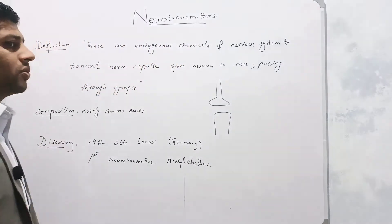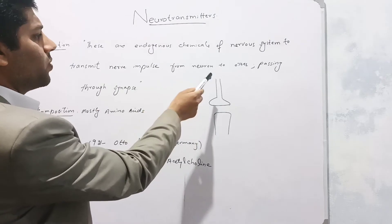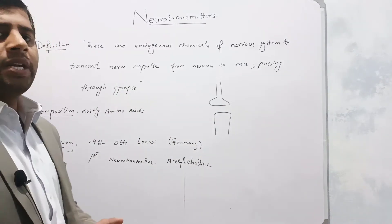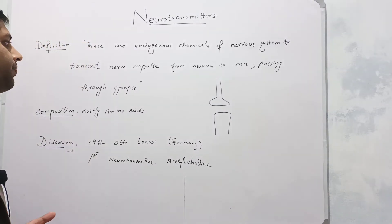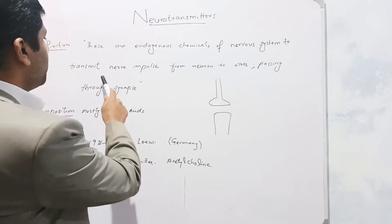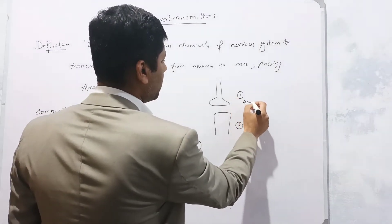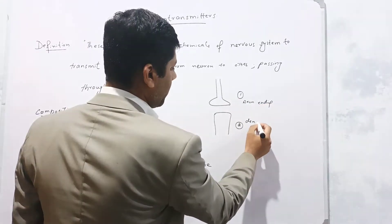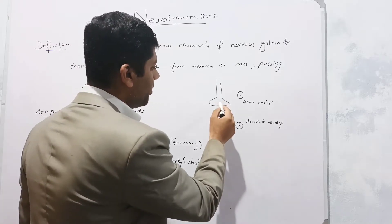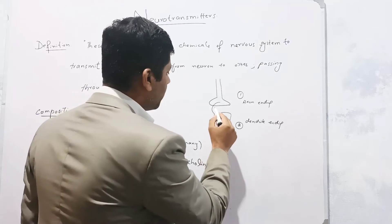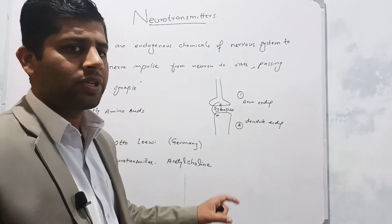First, we will define neurotransmitters. These are the endogenous chemicals of the nervous system which transmit nerve impulses from one neuron to another neuron, passing through the synapse. They are endogenous, meaning they are produced within the body, within the nervous system. Neurotransmitters transmit the nerve impulse from the axon terminal of one neuron to the dendrite terminal of another neuron through a gap called the synapse.